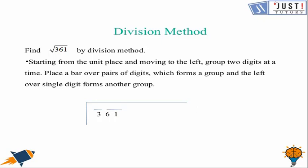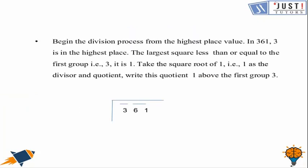When we find the square root using the division method, we start from the unit place digit on the right and move left. We create groups of two digits at a time, placing a bar over pairs of digits which forms a group, and the leftover single digit forms another group.